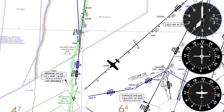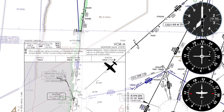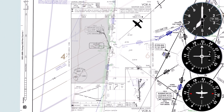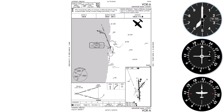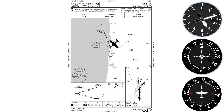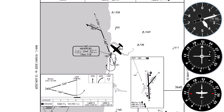It's around now that we're told to expect the VOR alpha approach into Newport, so we have a look at the approach plate for that with our position overlaid onto it. We'll be cleared for the approach and told to cross Newport at or above 2,400 feet. This means we can start our descent. We'll only be down to around 4,200 as we approach the station, so our descent will continue.